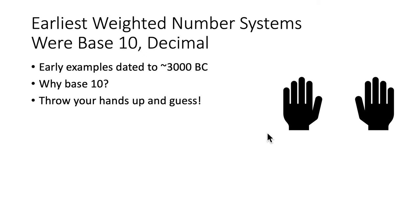Now the earliest weighted number systems that are known were base 10, as we use today. Those early examples dated back to about 3000 BC. Why base 10? Well, throw up your hands and guess.